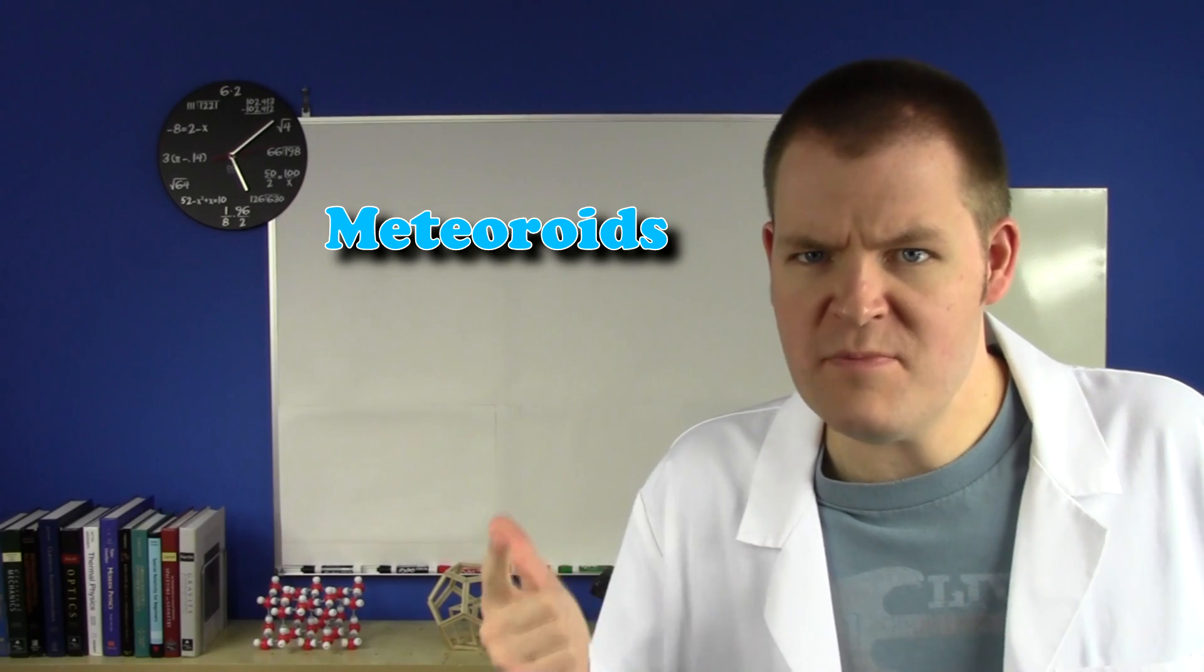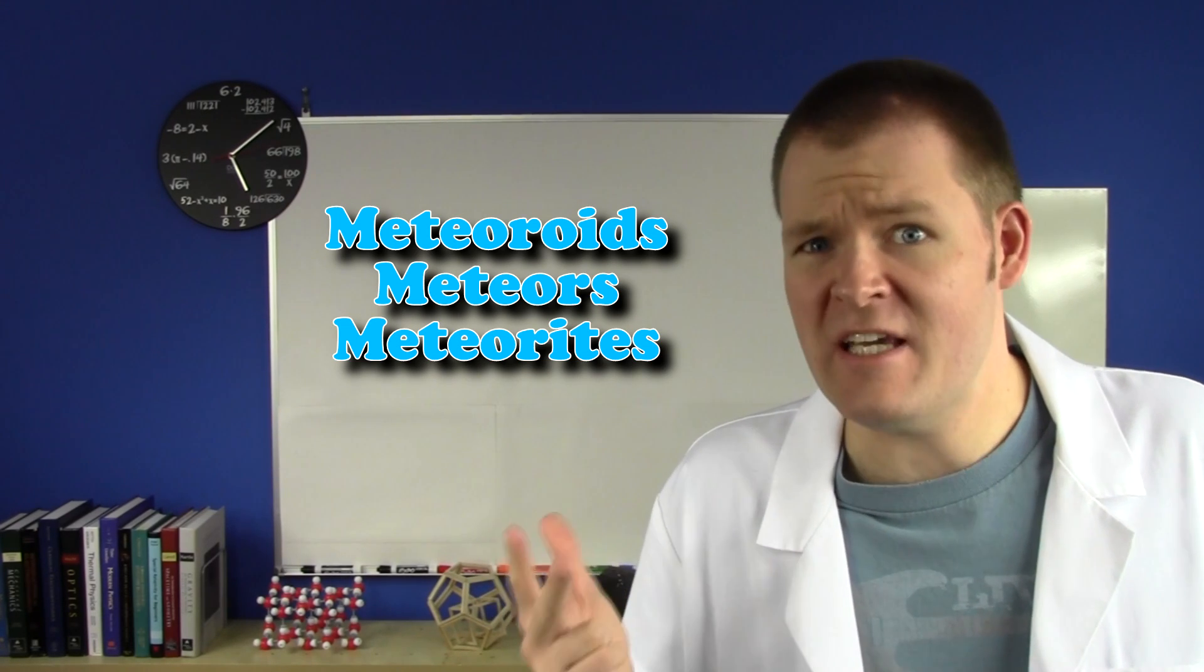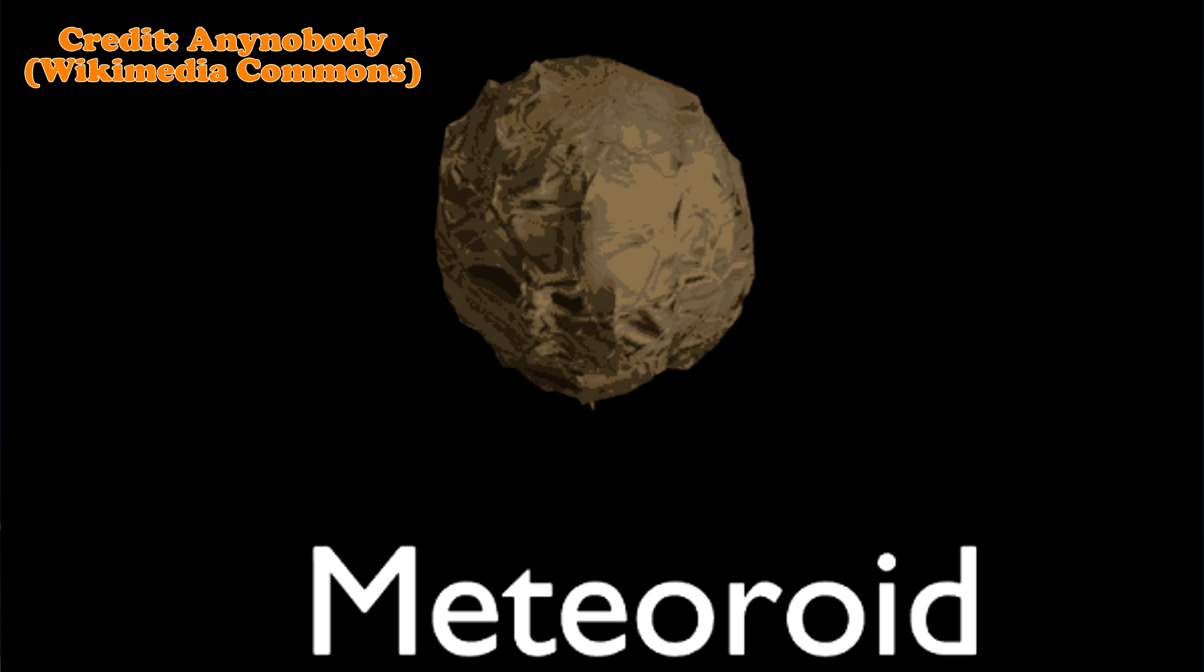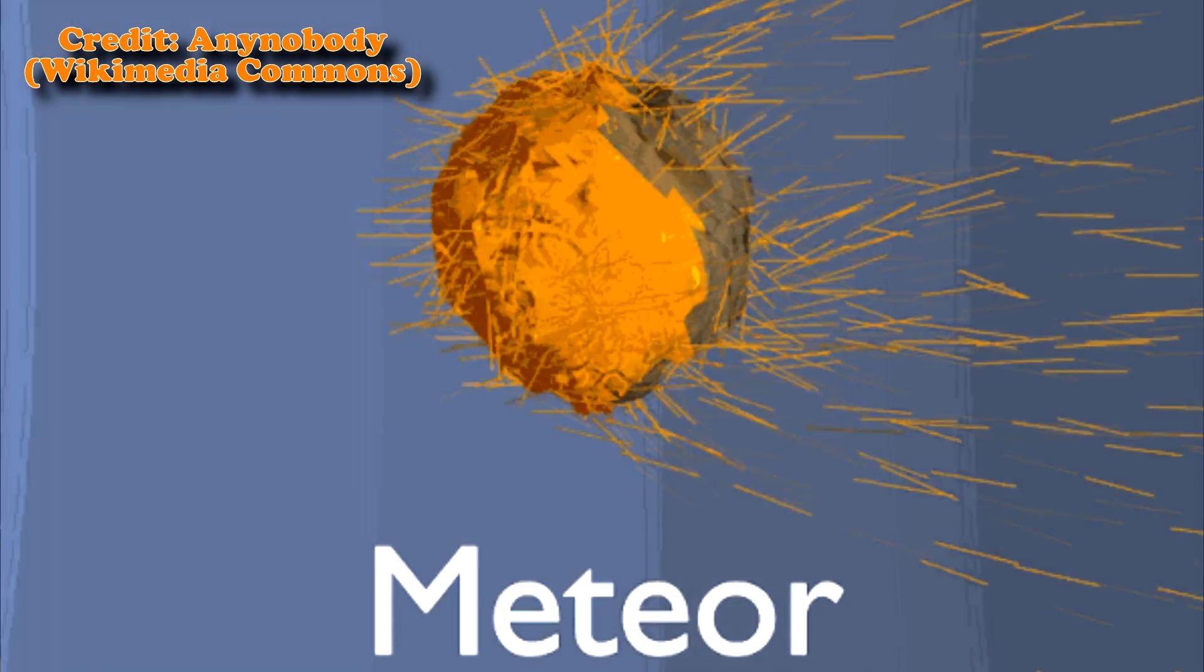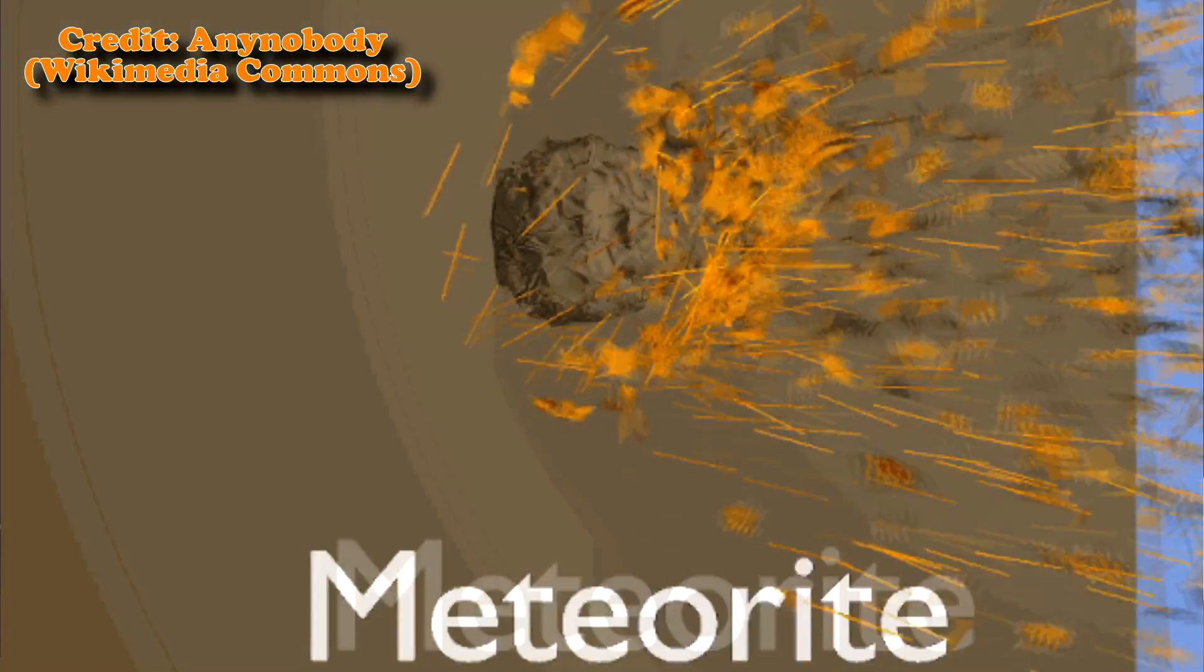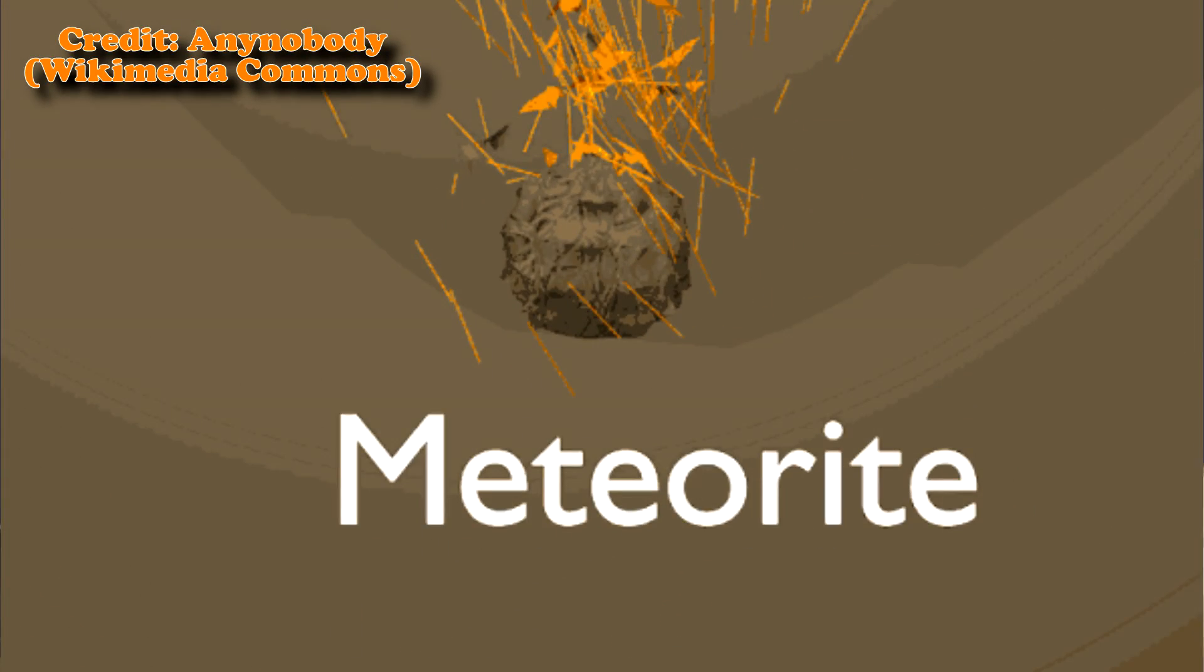As for meteoroids, meteors, and meteorites, astronomers are just getting ridiculous at this point. Meteoroids are just asteroids smaller than trucks. Meteors are just what we call meteoroids as they're entering Earth's atmosphere. And meteorites are just meteors if they happen to touch the ground. There's no reason to have all these names. They're all just asteroids.